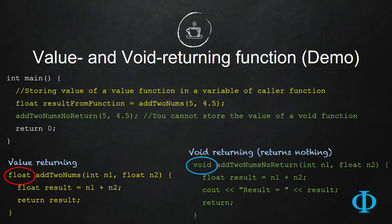As the name suggests, the value returning function returns some kind of value in the end of the function. For example, in this slide, this addToNums function is a value returning function which is returning a floating point result in the end of the function.